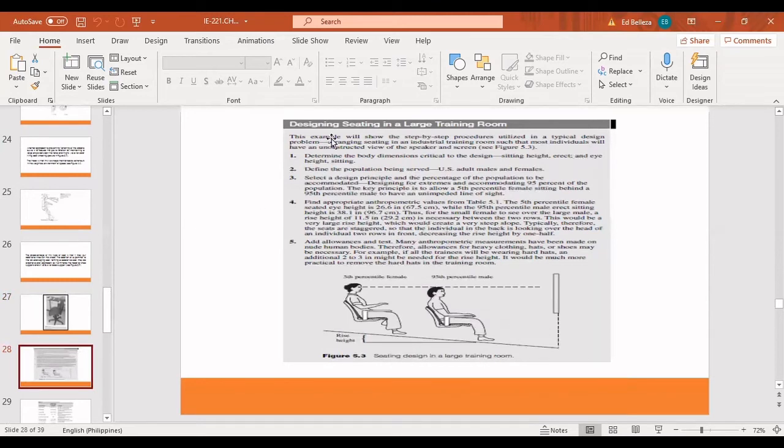This is also about designing seating in a large training room. In this part here, this example will show the step-by-step procedures utilized in a typical design problem. Number one is determining the body dimensions critical to the design such as sitting height erect and thigh height sitting. Number two would be define the population being served, such as adult males and females, it depends on the population that you have chosen. And next would be the number three, select a design principle and the percentage of the population to be accommodated. Number four would be find appropriate anthropometric values from table 5.1. And number five would be add allowances and test. This is actually a seating design in a large training room.